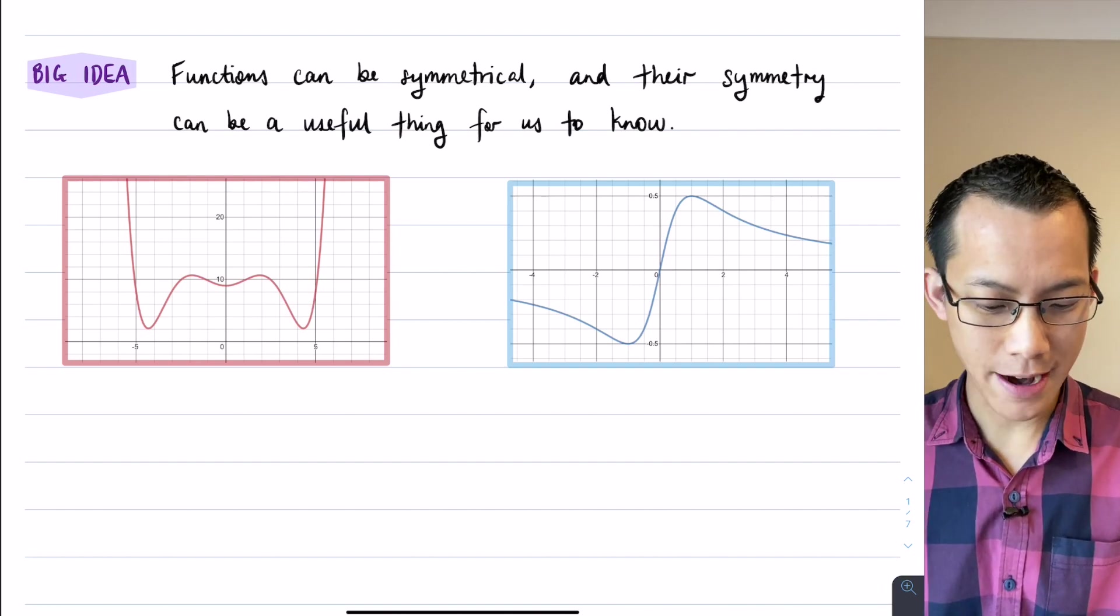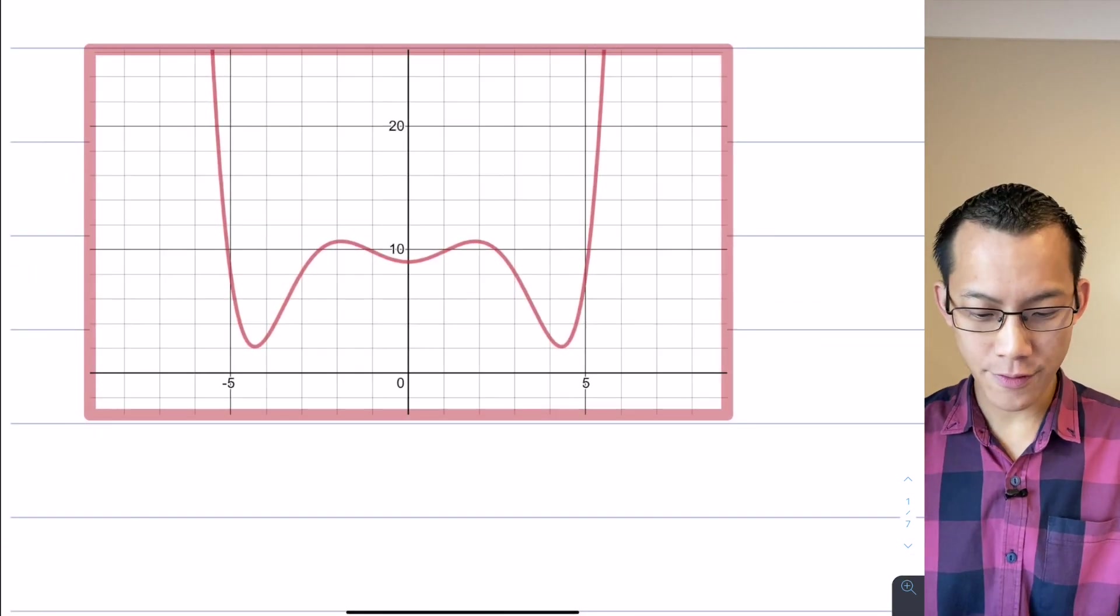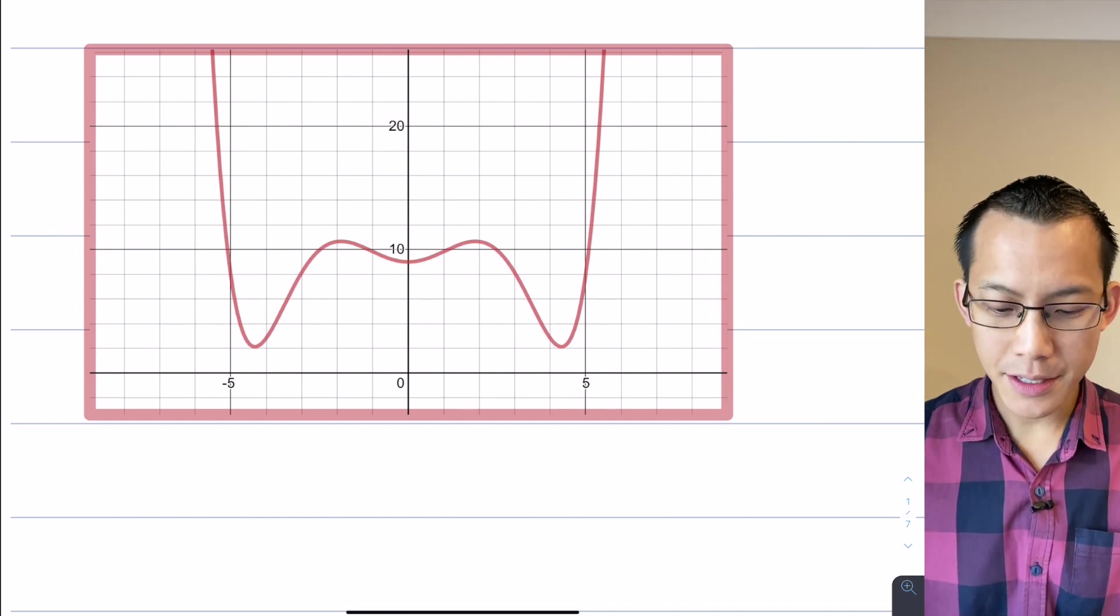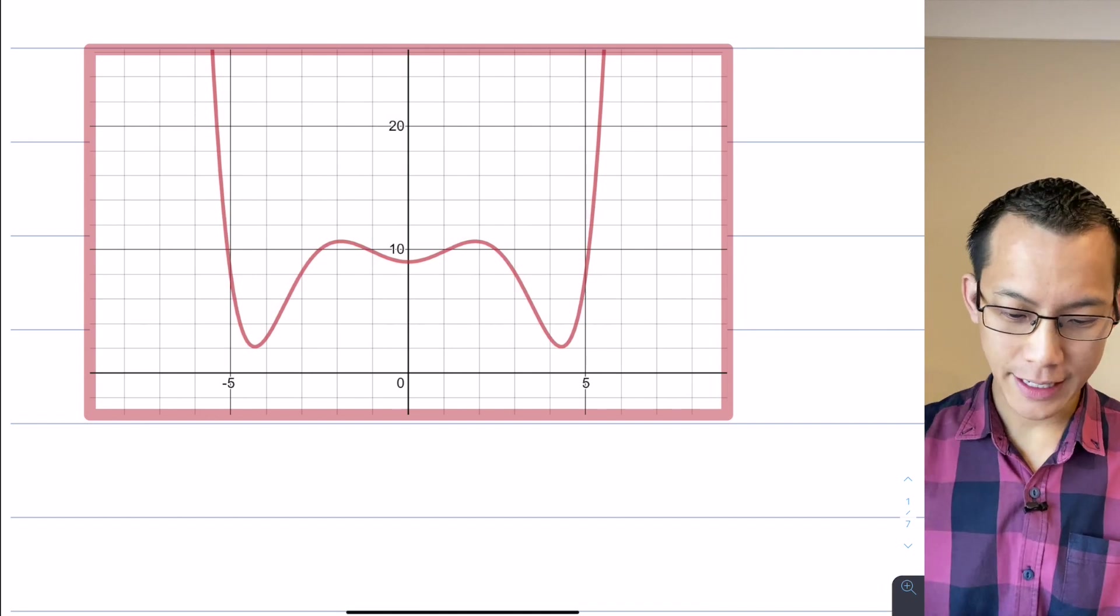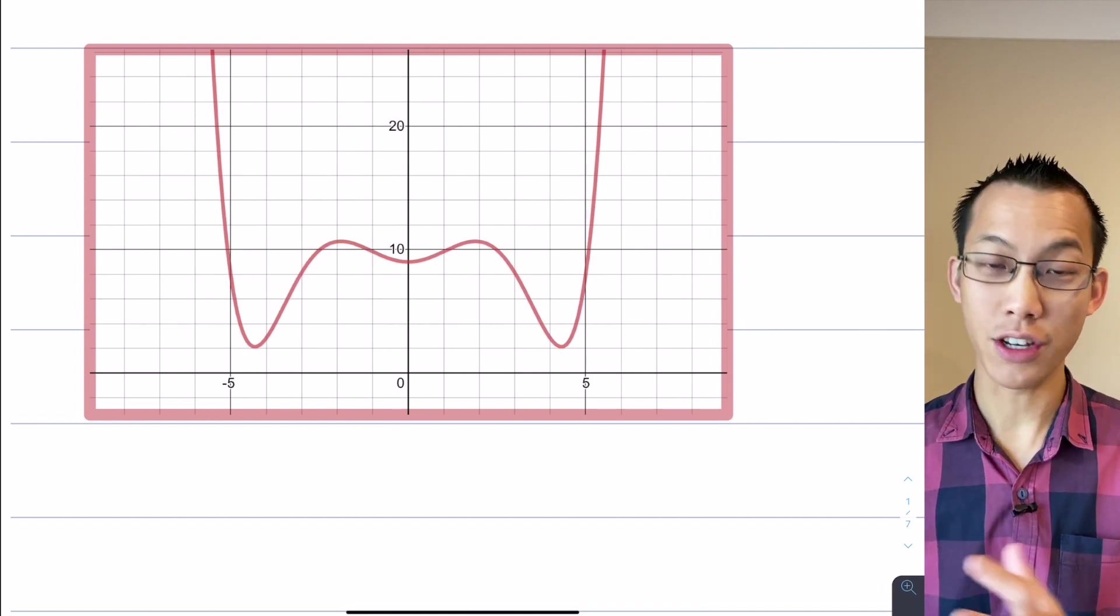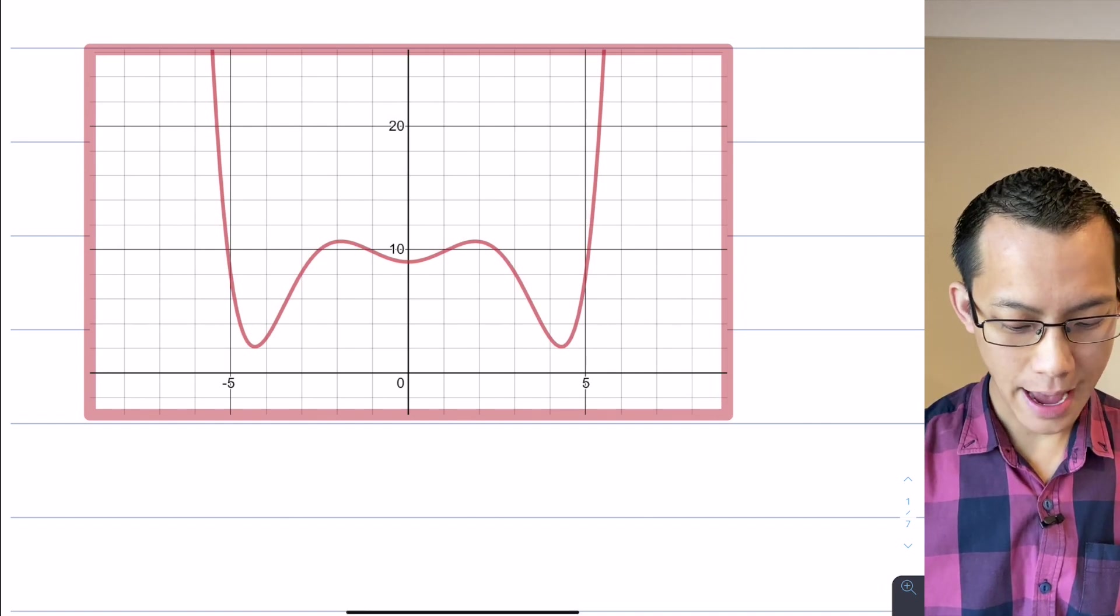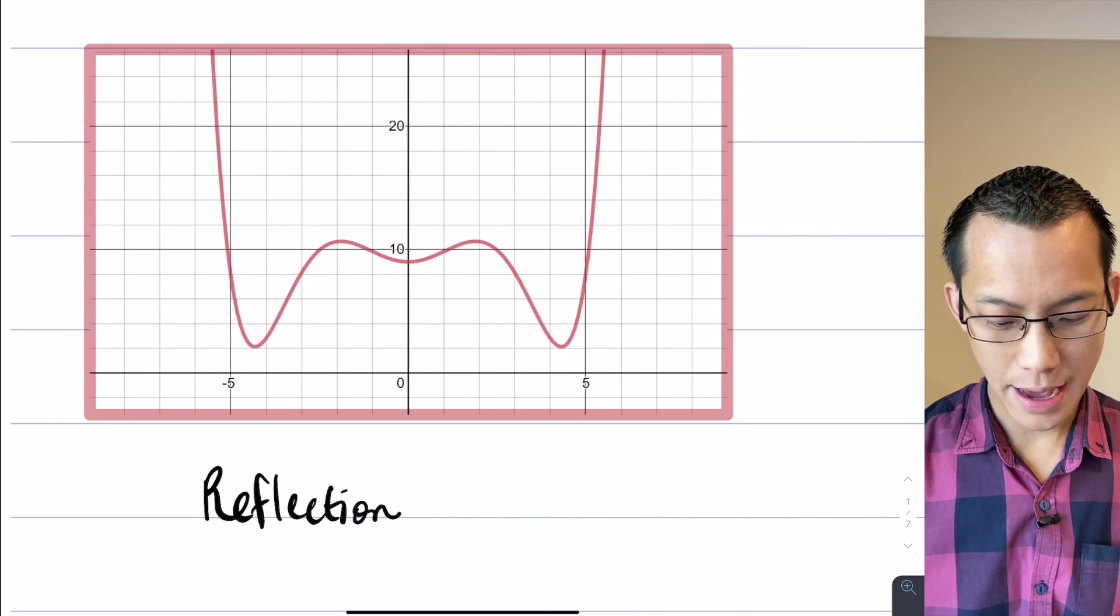So here's a couple of examples here. You've got this function over here which I think most people when they look at, even though they don't necessarily know what the function is, they would say, oh that's symmetrical. You know, if you kind of flip it over, if you reflect it, that's a kind of shape which is going to be the same on both sides.